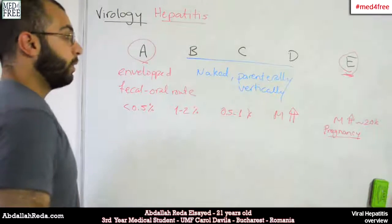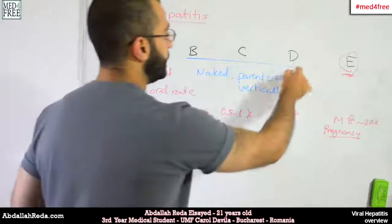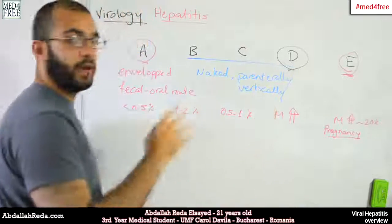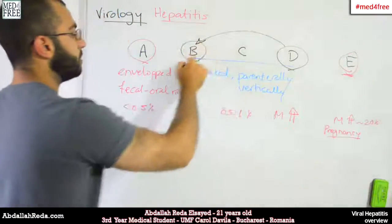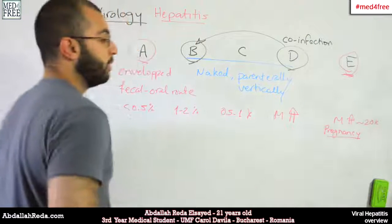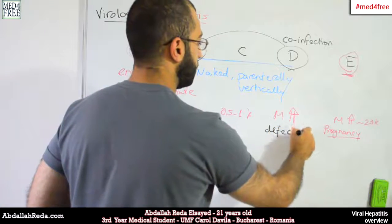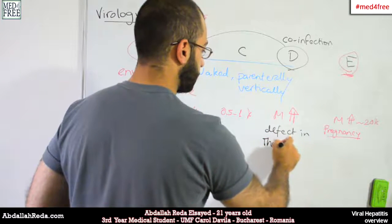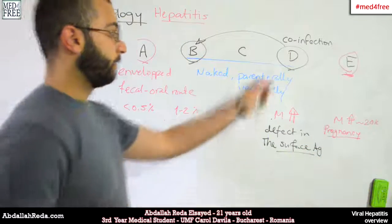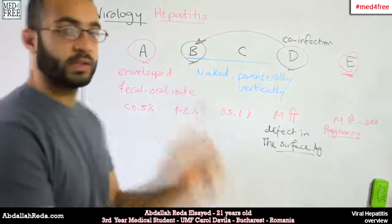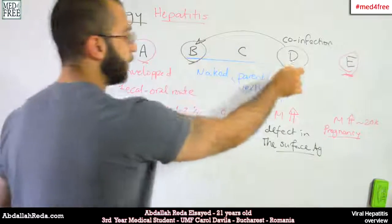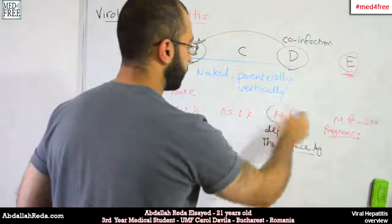Another important thing about virus D: it always occurs as a co-infection along with hepatitis B. Why? Because there is a defect in the surface antigen of hepatitis virus D. If it exists alone, it will not function properly — it needs another virus to correct that defect. If virus B is present, virus D will act. In that case, mortality rates are also pretty high.